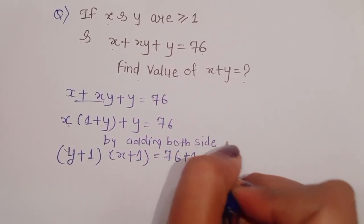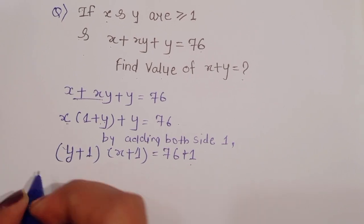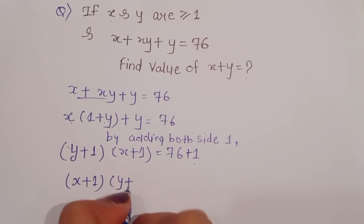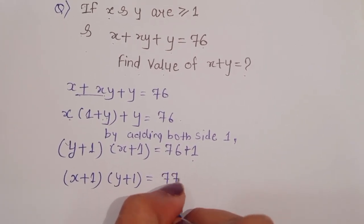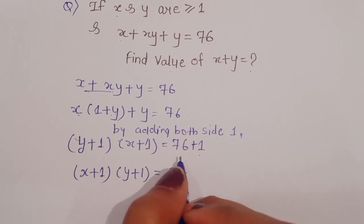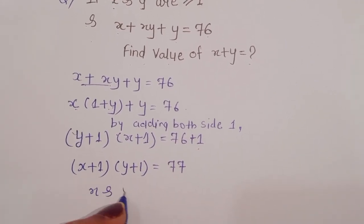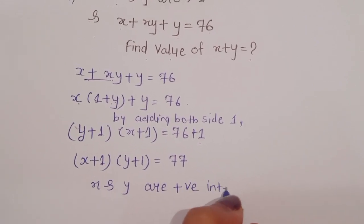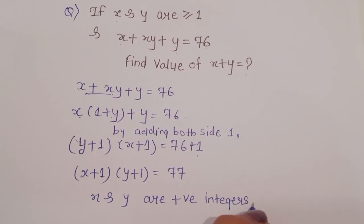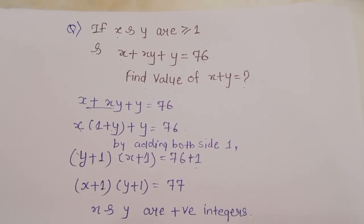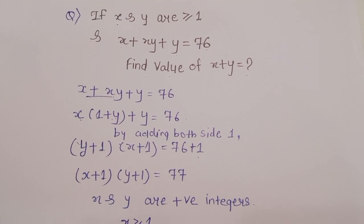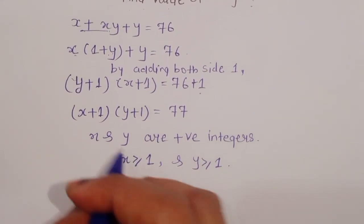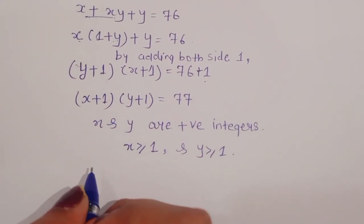Adding 1 to both sides, we get x plus 1 into y plus 1 is equal to 77. Now we know that x and y are positive integers, so x is greater than or equal to 1 and y is also greater than or equal to 1.